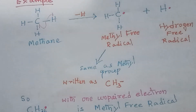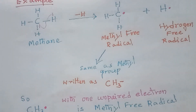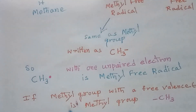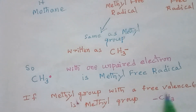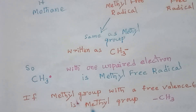The methyl group is written as CH3 with a small dash, meaning one free valence. If CH3 is written with one small dot, that represents one unpaired electron — it is the methyl free radical. If written with a small dash (free valence), it is called the methyl group. It can also be written as CH3 with a dash.